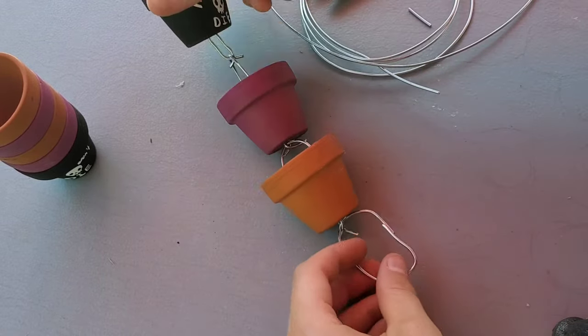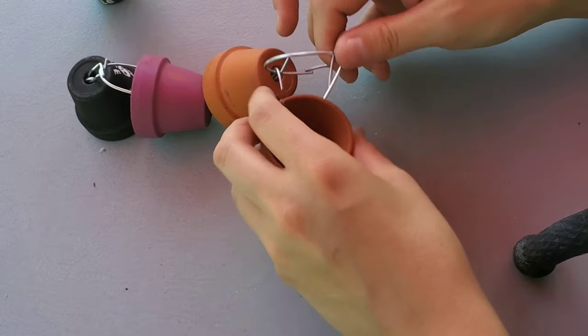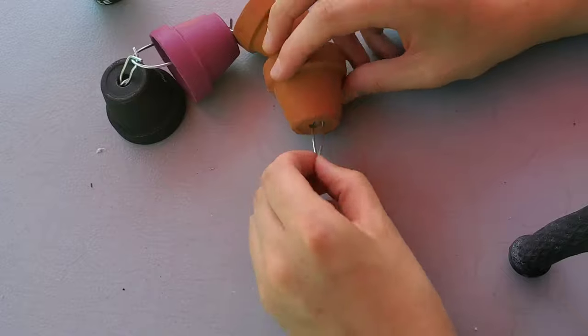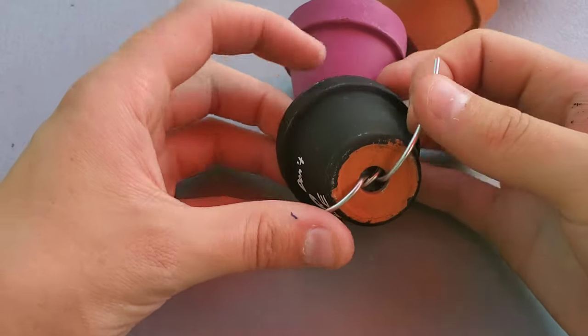You're going to continue to connect all of your terracotta pots exactly like this: have the scrunched up piece, push it through the bottom, attach one more chain, and then bend the ends.